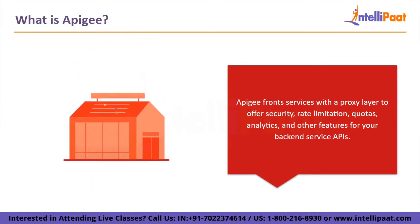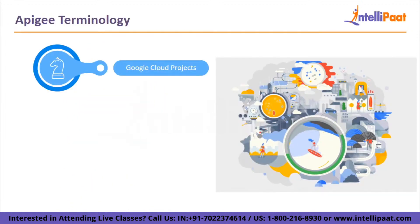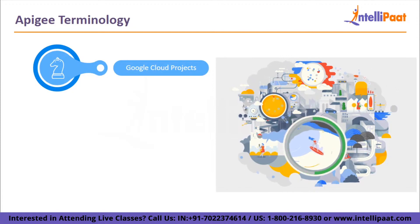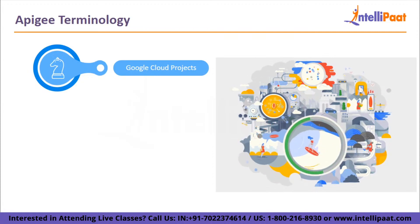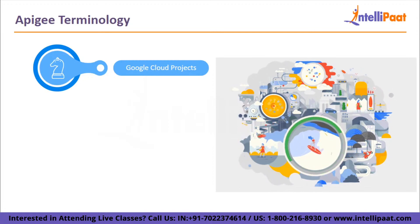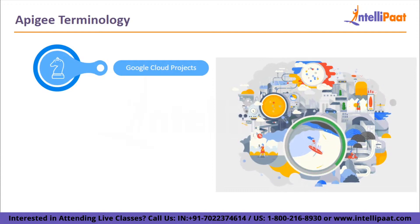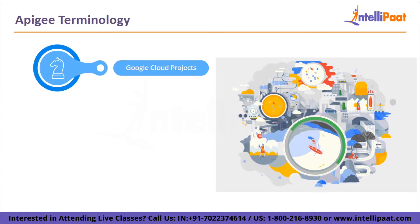Let's take a look at some of the terminology. First, we have Google Cloud projects. All Google Cloud services such as managing APIs, enabling billing, adding and removing collaborators and controlling permissions for Google Cloud resources are created, enabled and used using Google Cloud projects. Before you can develop and provision an Apigee organization, you first need to construct a Google Cloud project.